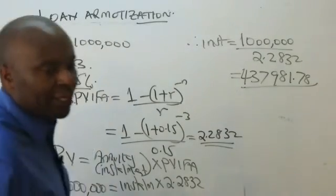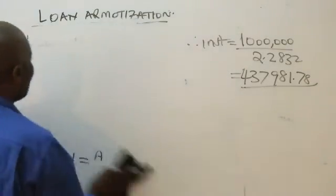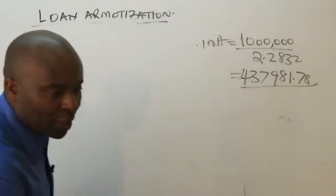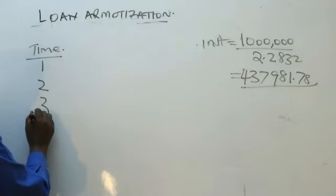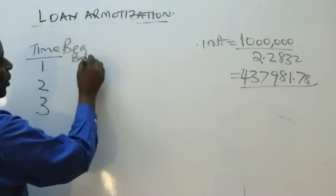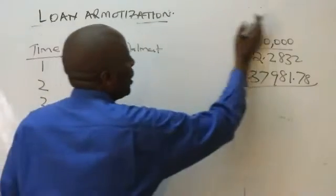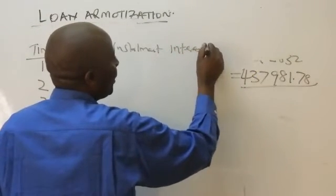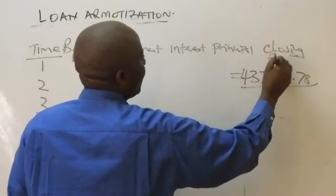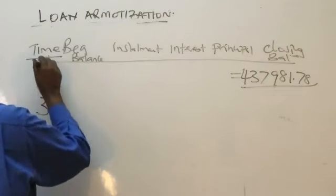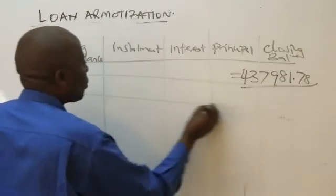The next thing I need to do is provide what we call a loan amortization schedule. So for the loan amortization schedule, we have: time — years one, two, three; beginning balance; installment to be paid; interest amount in the installment; principal amount; and lastly, the closing balance. Please start straight away with the installments, which have to be uniform throughout — 437,981.78 for each of the three years.